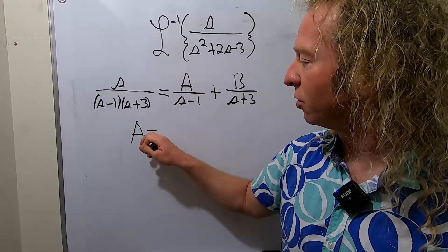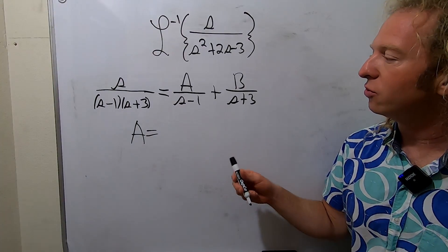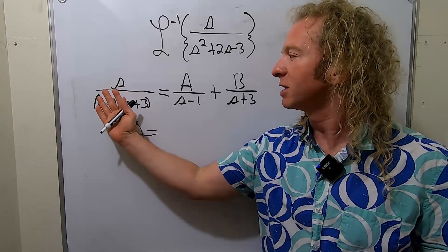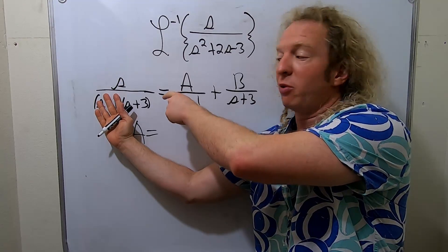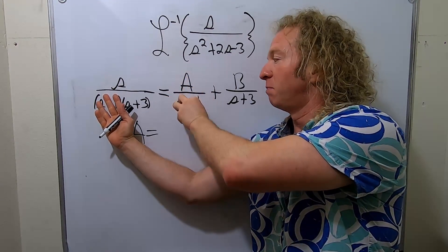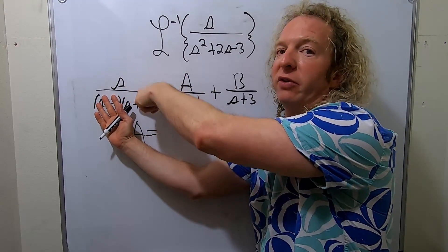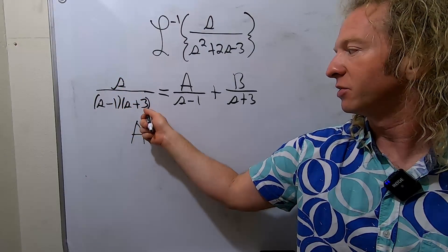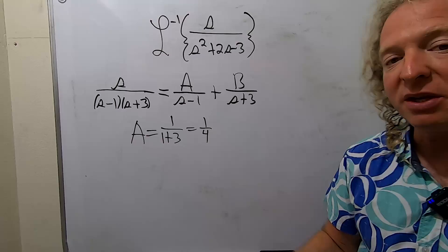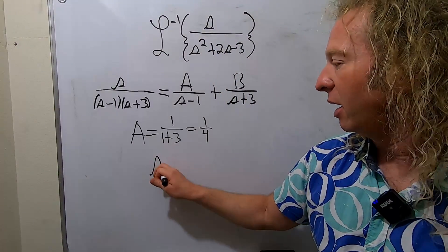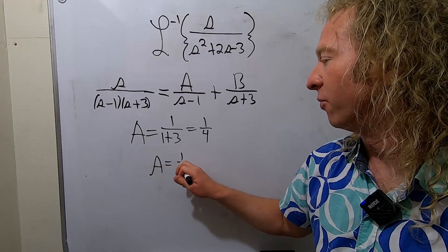So A is equal to... To find A, you cover up what's under A, so S minus 1. And you say, what makes this piece 0? So 1. So I put a 1 here. It's going to make this bottom piece 0. So you put a 1 everywhere else over here. So it'll be 1 over 1 plus 3. That's 1 over 4. So A is equal to 1 fourth.